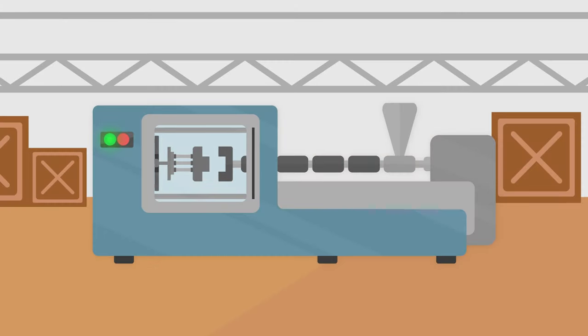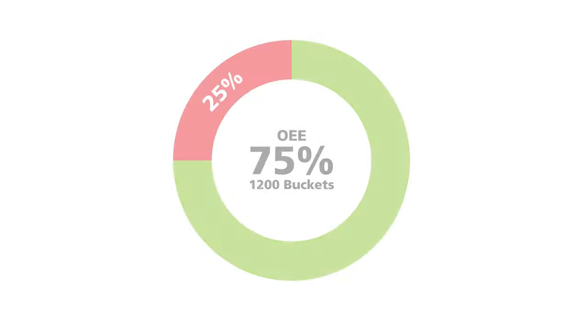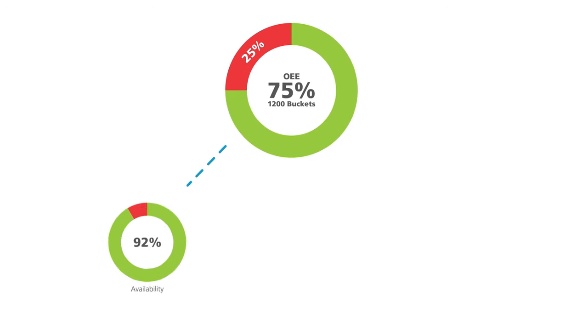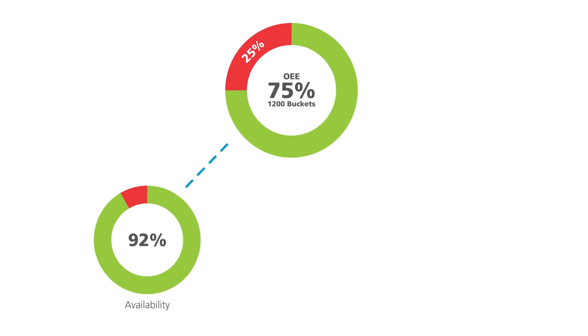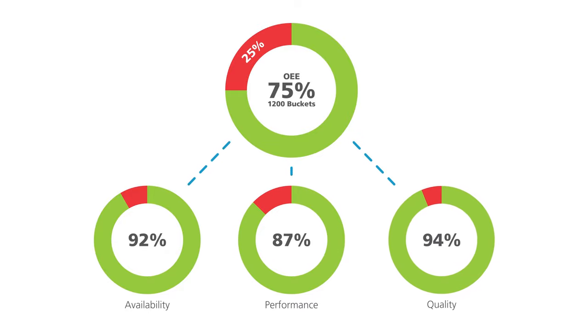There are three factors which can impact your OEE score: the availability of your machines, the performance, and the quality of your output.